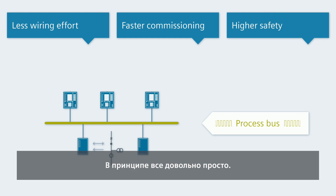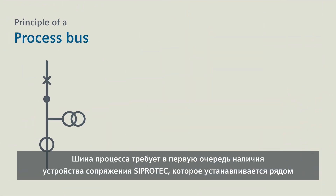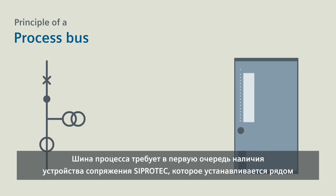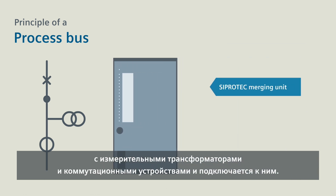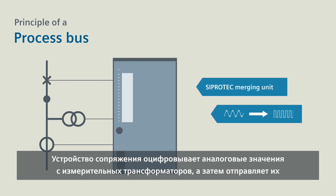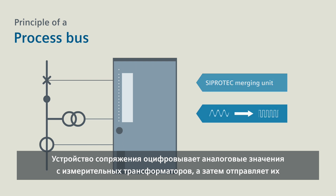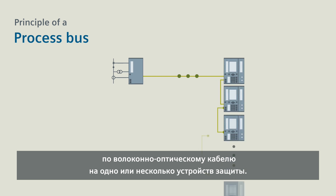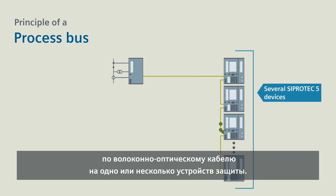In principle, everything is quite simple. For a process bus, you first of all need a CProtek merging unit, which you place close to the instrument transformers and switching devices and connect it to them. The merging unit digitalizes the analog values of the transformers and then sends them via a fiber optic cable to one or more protection devices.